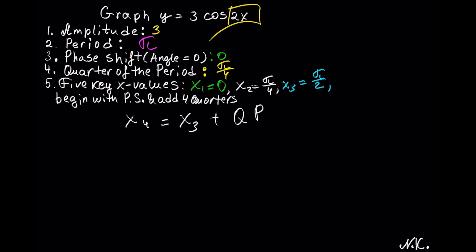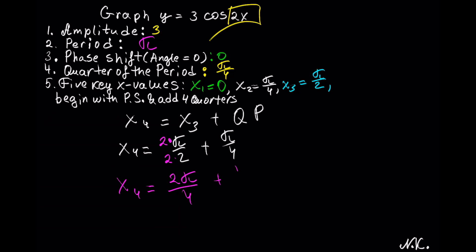x₄ is calculated by taking x₃ and adding a quarter of the period to it. So x₄ equals π/2 plus π/4. We need a common denominator; the smallest number divisible by both 2 and 4 is 4. Multiplying the first fraction gives 2π/4, so x₄ equals 2π/4 plus π/4. We had 2π plus π in the numerator, giving us x₄ equals 3π/4.